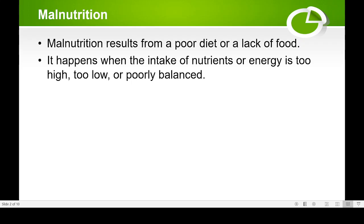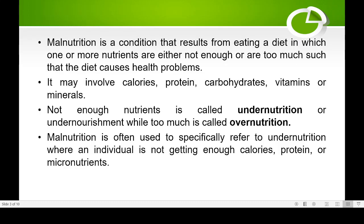The word 'mal' means diseased, so malnutrition means diseased nutrition. It can be low nutrition or excess nutrition. Malnutrition is a condition that results from eating a diet in which one or more nutrients are either not enough or too much. If there is more fat in your body, that leads to overweight; if there is not enough fat, that leads to weakening of the body. Both are causes of health problems.